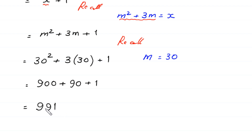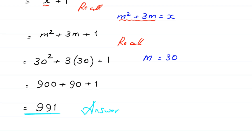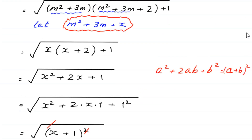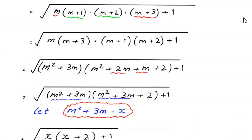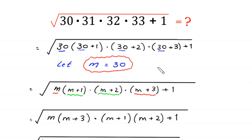So 991 is the simplest form of that expression and the final answer to this problem. The original expression is equal to 991.